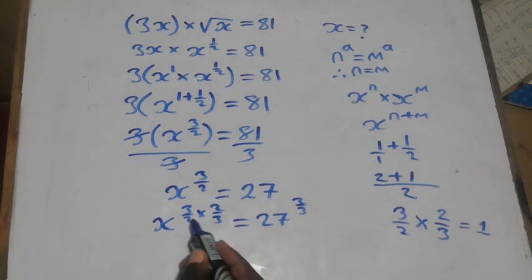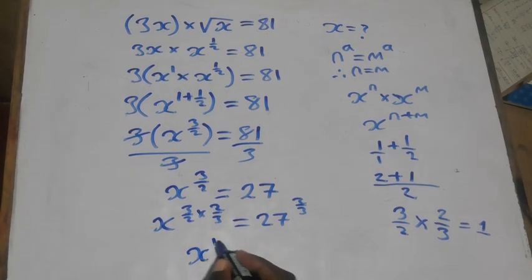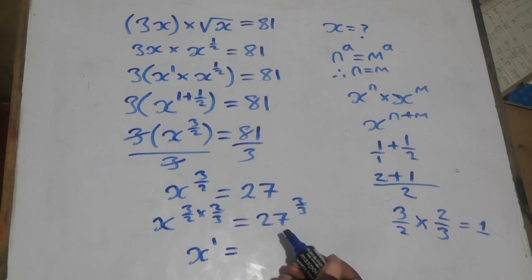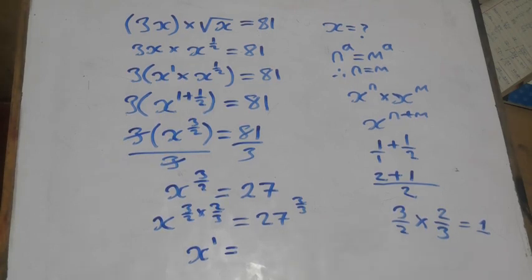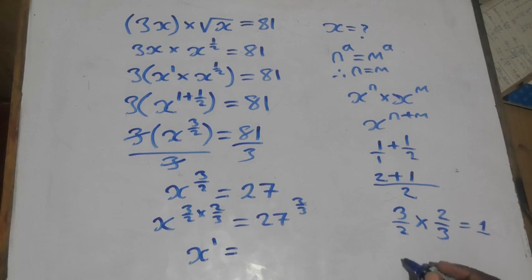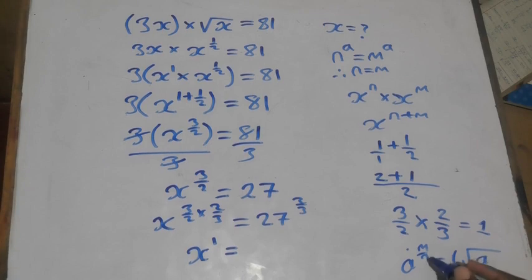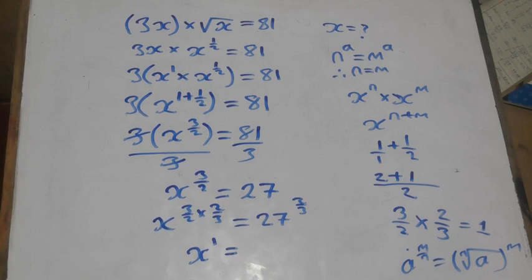Multiplying the reciprocal cancels the power on the left, leaving x to the power 1. On the right-hand side we apply the law of indices which states that a to the power m over n is equivalent to the n-th root of a, raised to the power m.